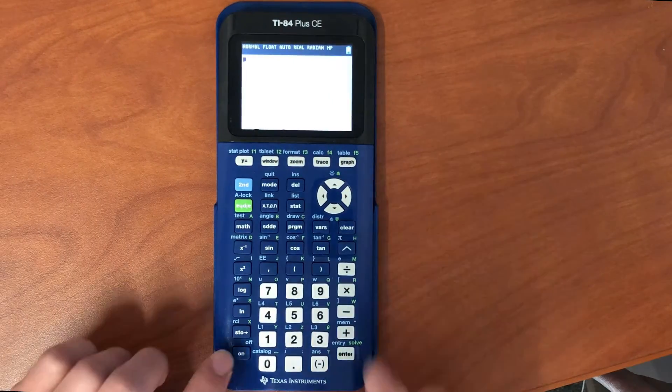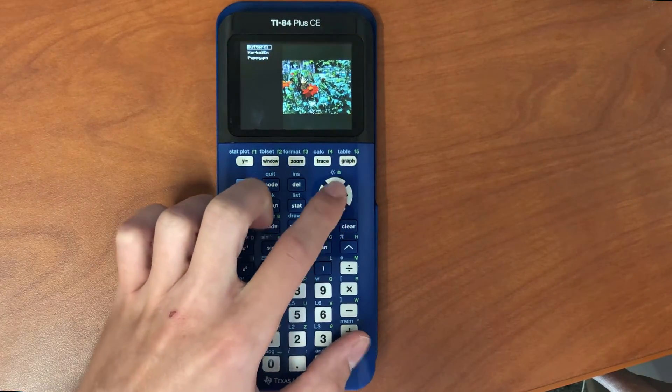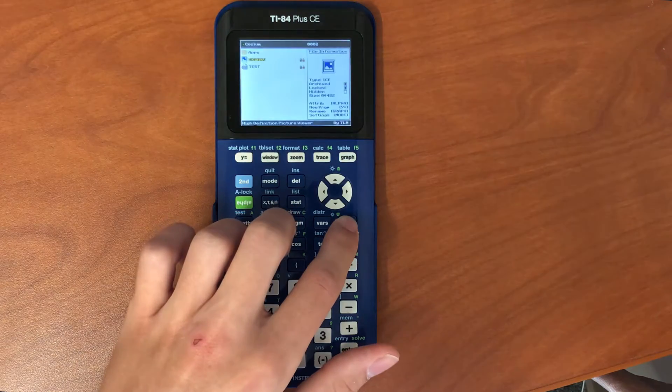If you enter settings and enable keypad shortcuts, then all you need to do to launch Cesium is press on and program at the same time. Press clear to go back to the home screen.